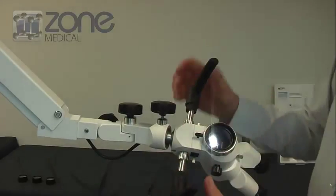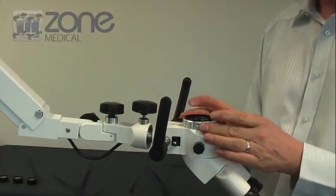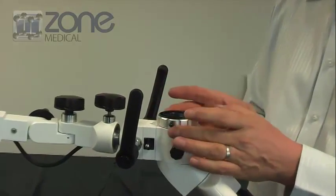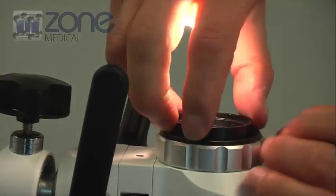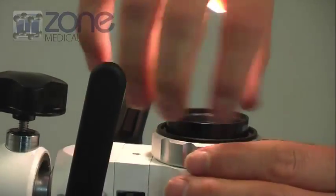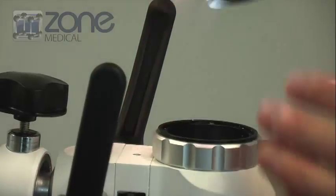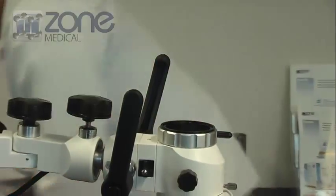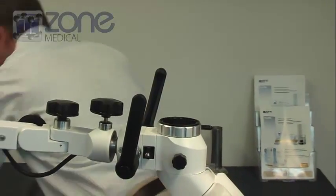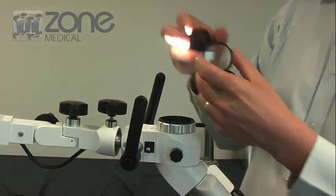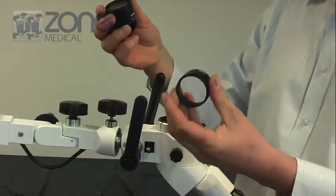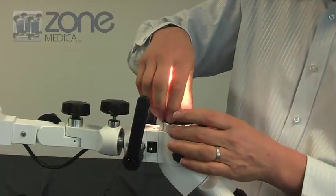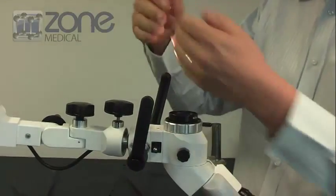There's a number of different focal length filters available. To replace them, you just unscrew here. This is the 200mm focal length lens, and there's a number of different lenses available: 400mm, 300mm, and 250mm. You use those depending on your personal working distance that you want to work with.